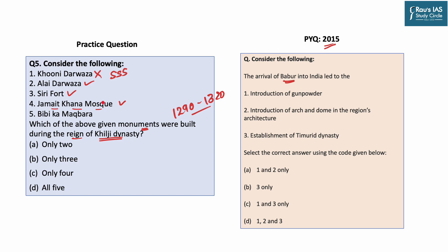Jamaat-e-Khana Mosque is part of the Nizamuddin Auliya Dargah complex. The last one, Bibi Ka Makbara — this is incorrect; Bibi Ka Makbara was built by Aurangzeb and was dedicated to his wife Dilras Bano Begum. It is situated in the city of Aurangabad in Maharashtra — please comment in the comment box what is the new name of the city of Aurangabad. Based on this discussion, the correct answer is options 2, 3, and 4. The answer to the UPSC's question was option B, that is only 3.